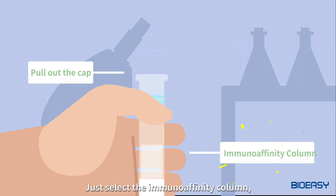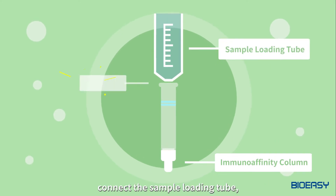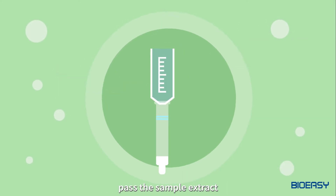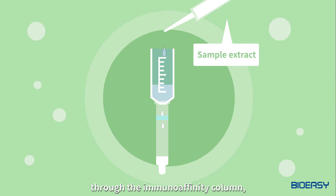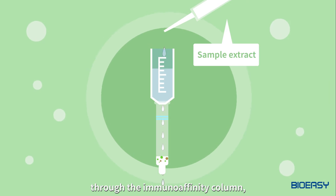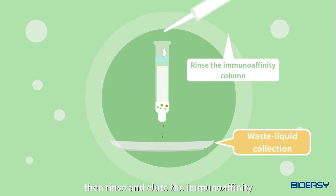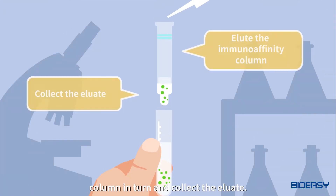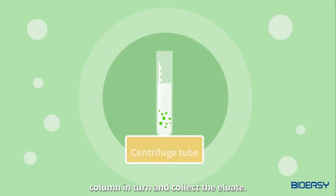Just select the immunoaffinity column, connect the sample loading tube, pass the sample extract through the immunoaffinity column, then rinse and elute the immunoaffinity column in turn and collect the eluate.